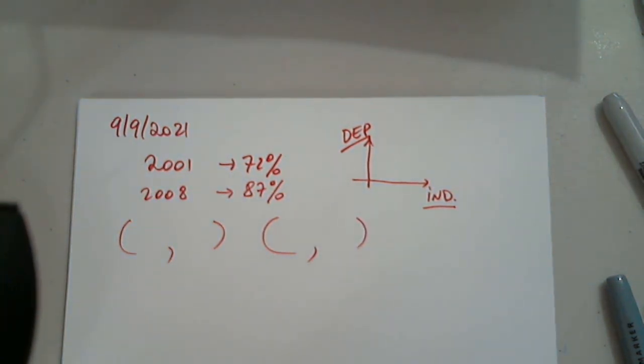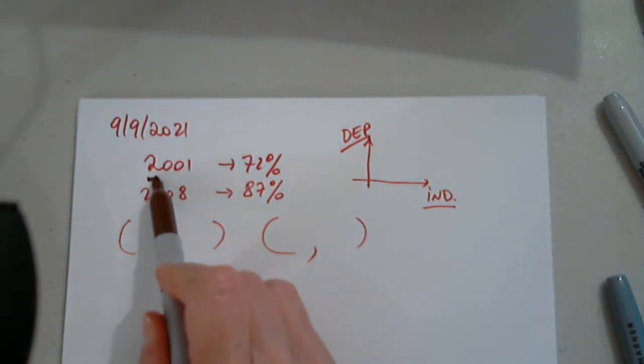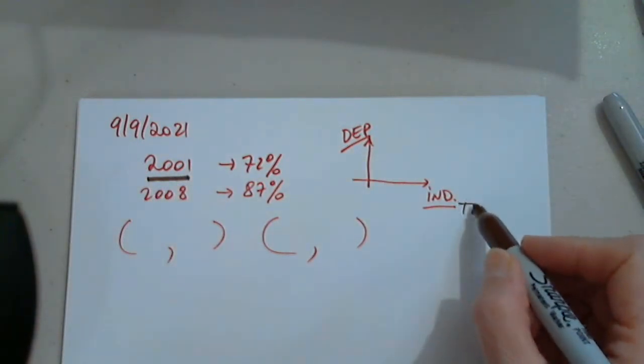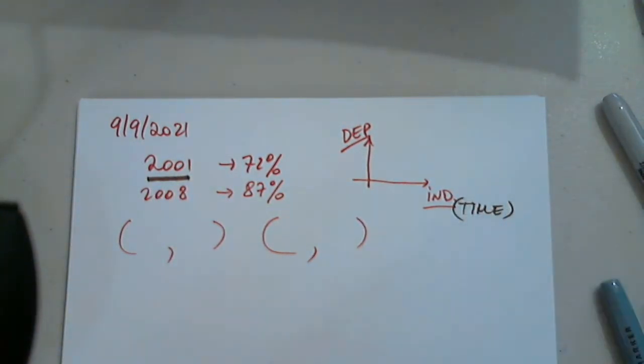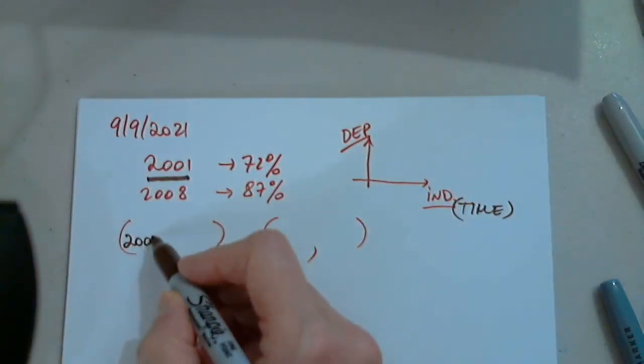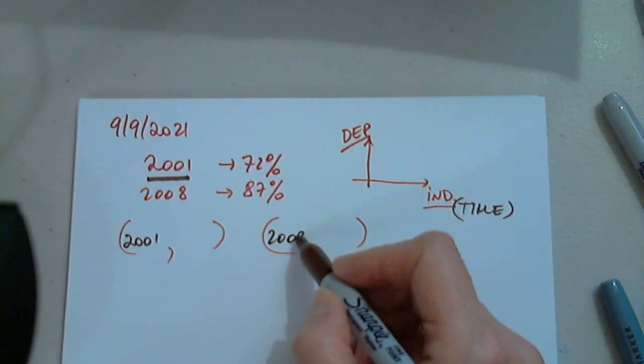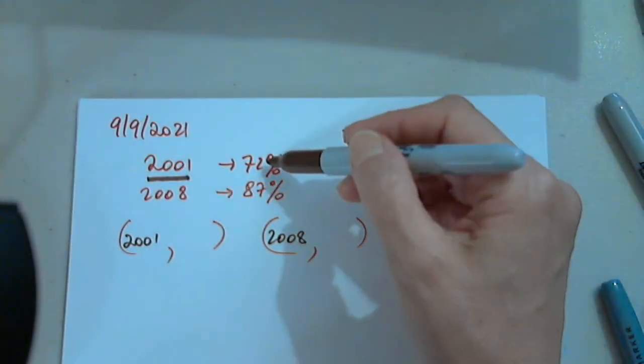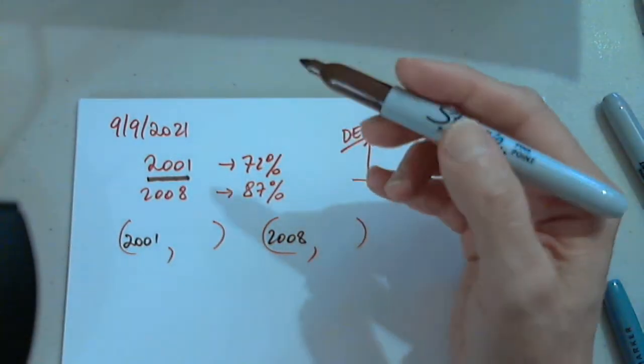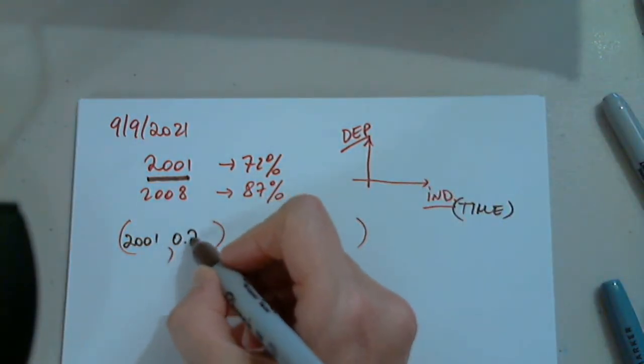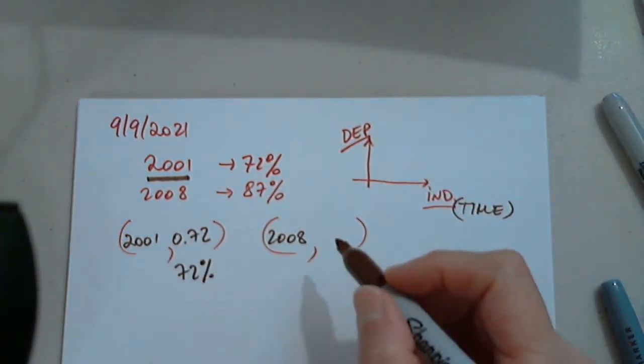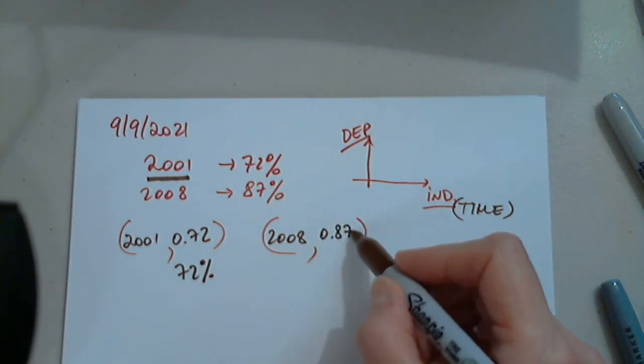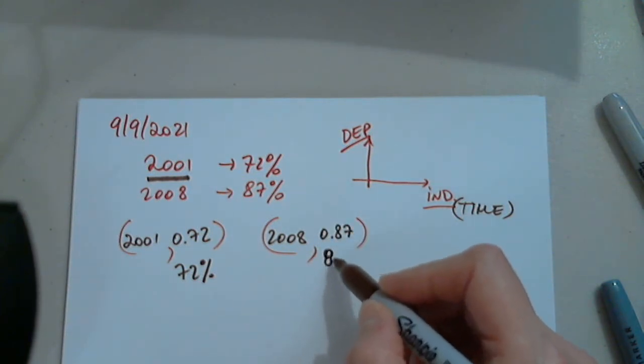So in some problems, you're not going to have that information. They're not going to tell us use this for that or use this for this. The independent variable is always time in this case. If time is available in the problem, then time will always be the independent. So that's why this is 2001 and this is 2008. And the dependent variable is 72%. Now, I don't know if they want 0.72 or 72%.